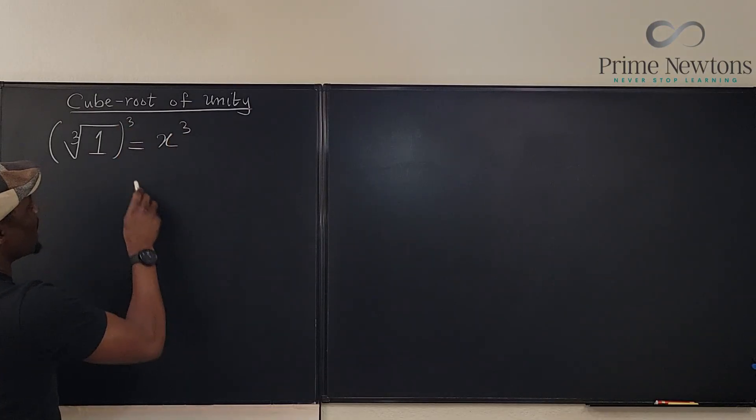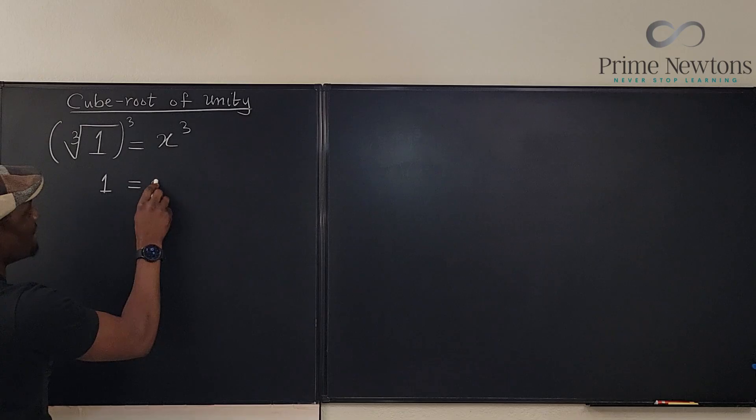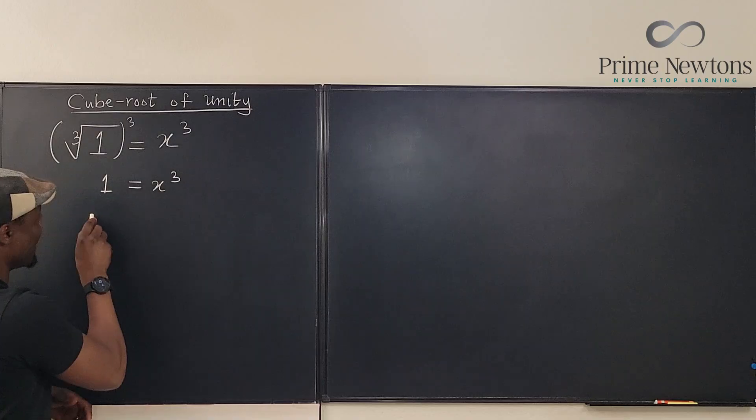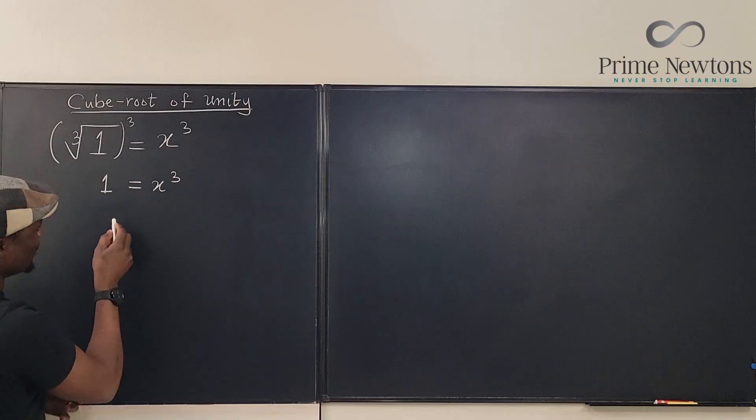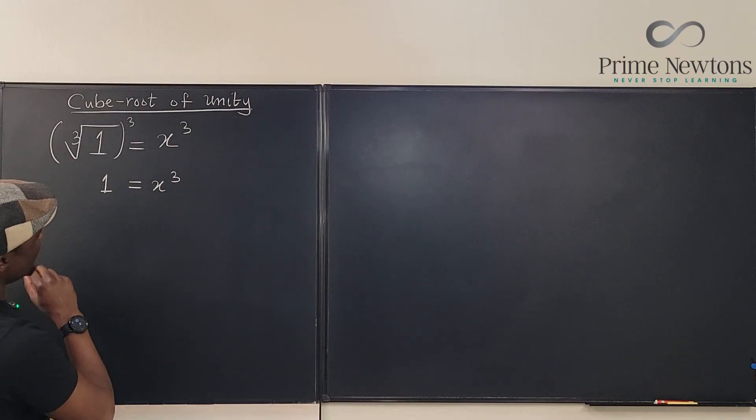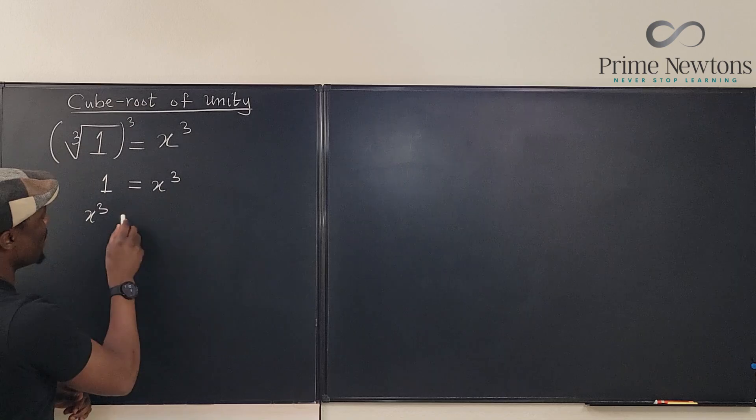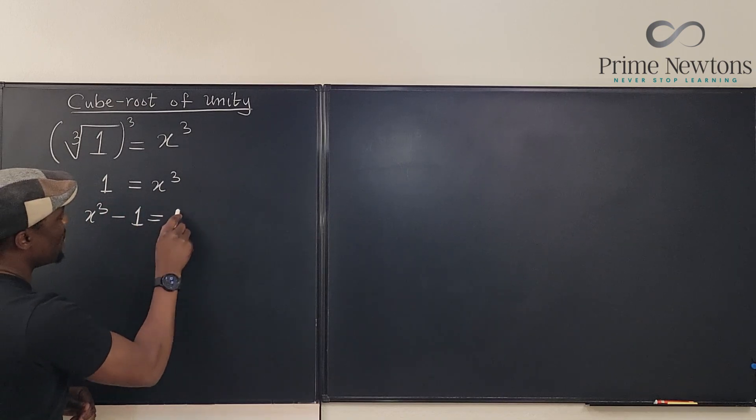And I'm gonna cube this. Well, this cube gets rid of this, so I just have 1. And on this side, I have x cubed. And this looks easy, right? You can just make an equation out of this. Just say, I have x cubed. Move this 1 over. You're gonna have 0 left here. x cubed minus 1 is equal to 0.